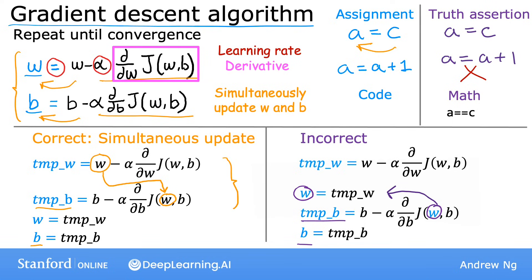The way that gradient descent is implemented in code, it actually turns out to be more natural to implement it the correct way with simultaneous updates. When you hear someone talk about gradient descent, they always mean the gradient descent where you perform a simultaneous update of the parameters. If, however, you were to implement non-simultaneous updates, it turns out it will probably work more or less anyway, but doing it this way isn't really the correct way to implement it, it's actually some other algorithm with different properties. So I would advise you to just stick to the correct simultaneous update and not use this incorrect version on the right.